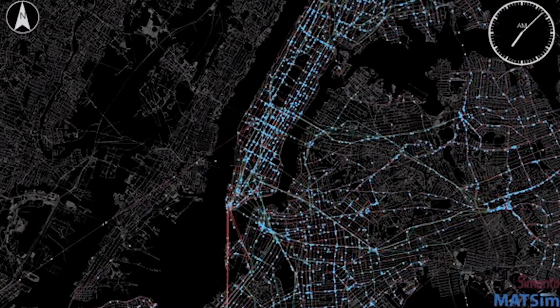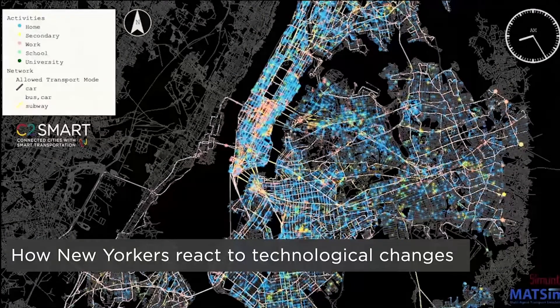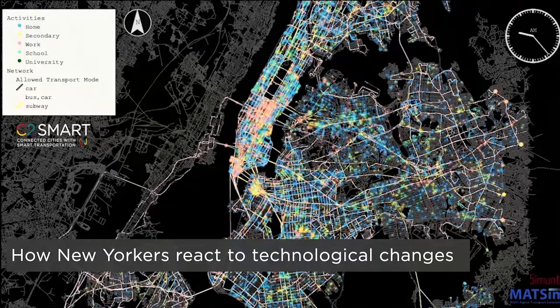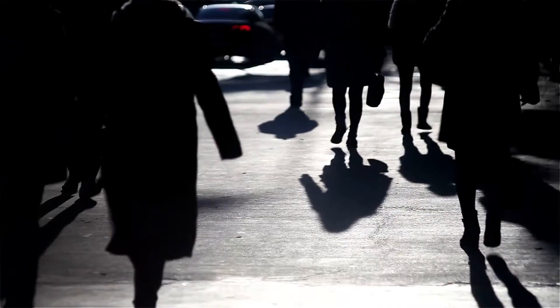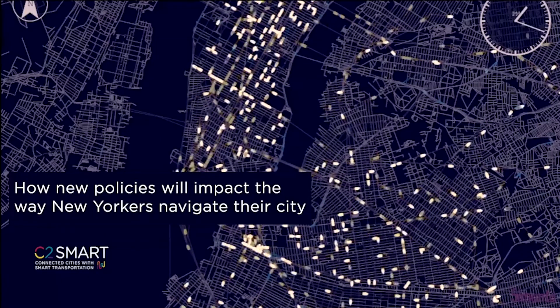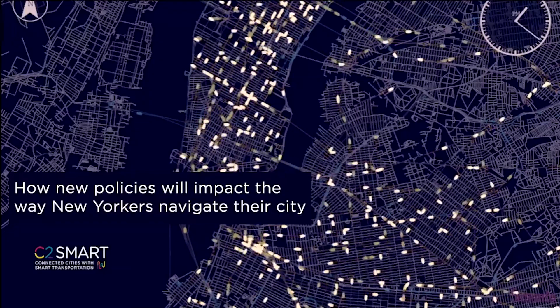I'm also the Deputy Director for C2Smart Center. MatSim is a simulator which uses agent-based simulation, which means that every individual person gets simulated and they have their own agenda. They have their own home, their own age, how much money they make, their race — all these individual attributes which mirror real people, and so it makes for much richer simulations.